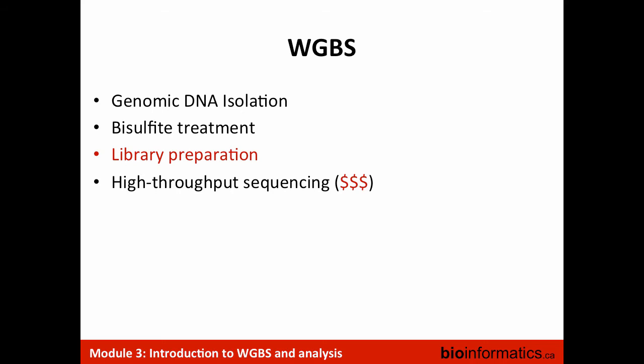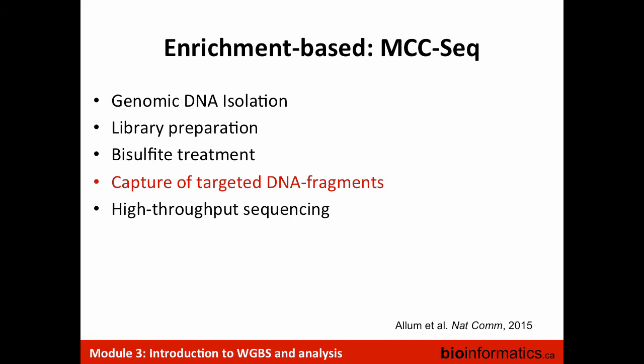The last technology — whole genome bisulfite sequencing — has many advantages but one big disadvantage: the price. One of the advantages is a very simple protocol, which not only means it's easier to do but also that it has fewer biases compared to the other ones that depend on the antibody or the RRBS protocol. You shear the DNA, take all of the DNA, do the bisulfite treatment, and then do the high-throughput sequencing. The drawback is really the cost.